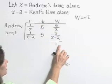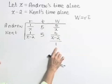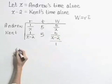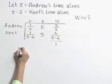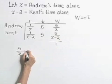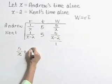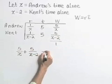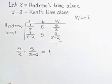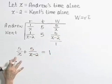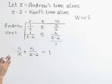We're going to use this column to write our equation. So the amount done by Andrew plus the amount done by Kent, 5 over x plus 5 over x minus 2, is equal to one complete job. We've completed step 3, we've written our equation.